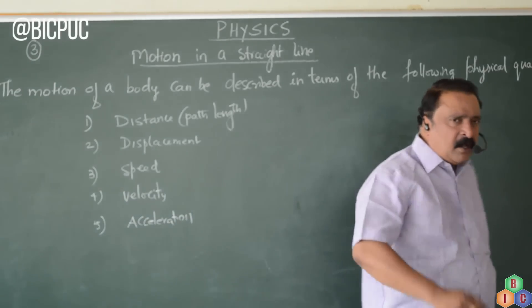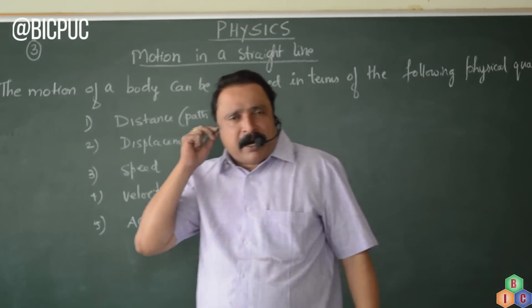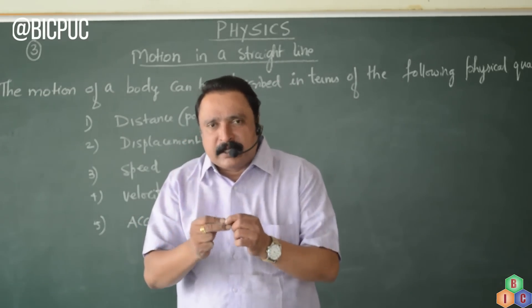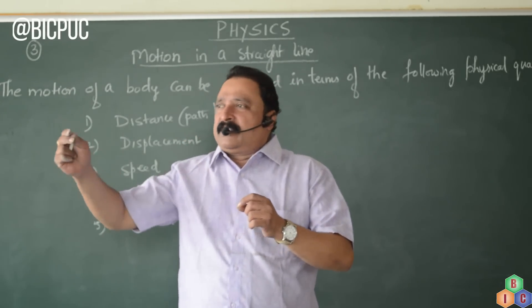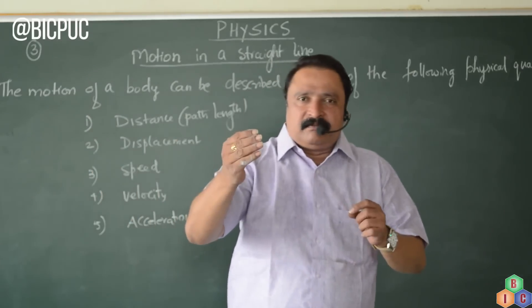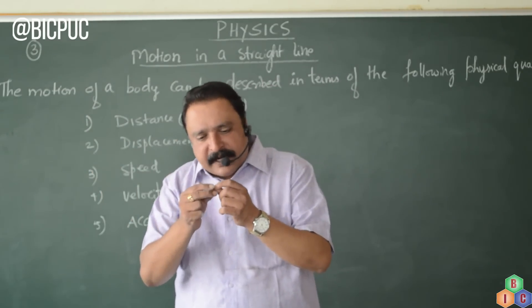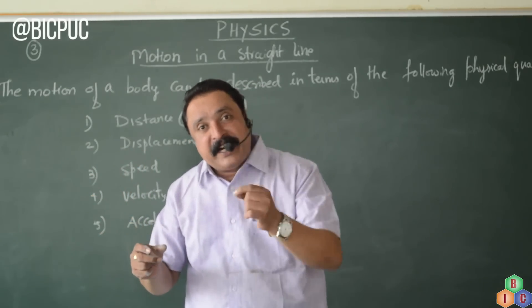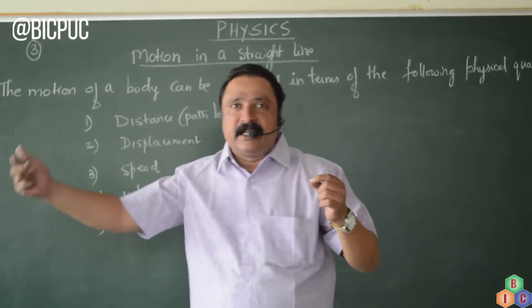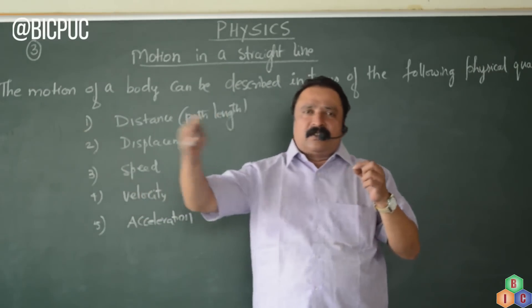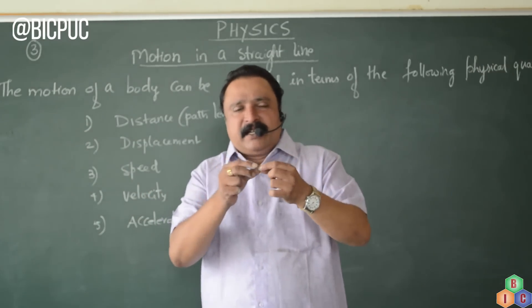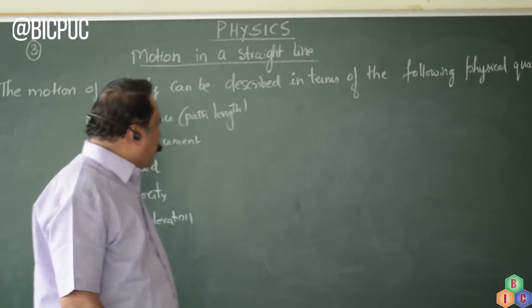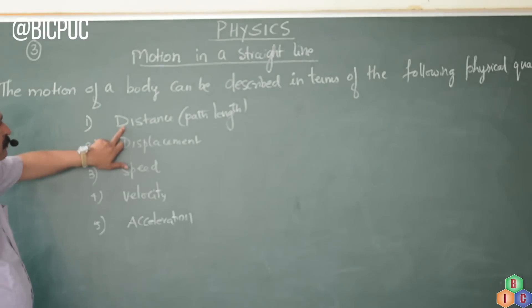What is the meaning of 'particle'? A particle is a body having a very small size. For example, if the size of a body is very small compared to the distance it has traveled — say it has traveled thousands of kilometers and its size is very small — then we refer to such bodies as a particle.